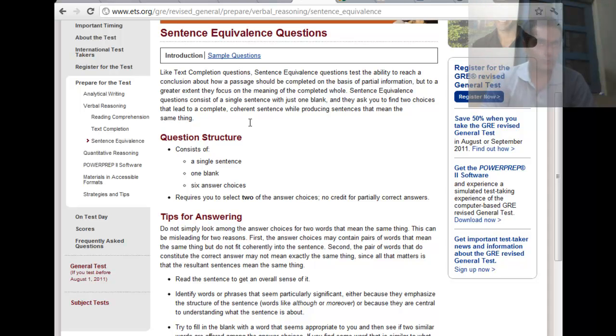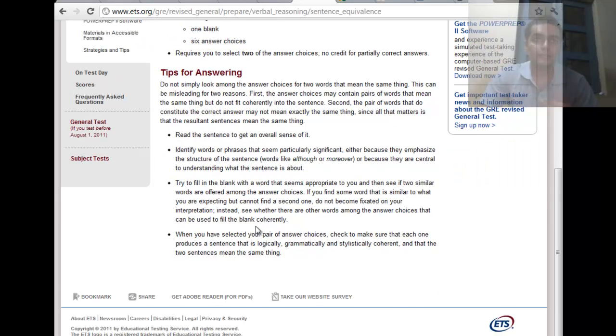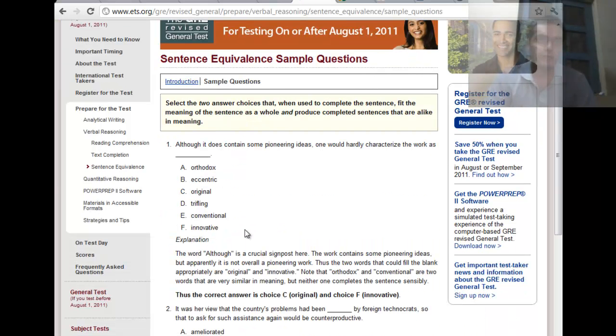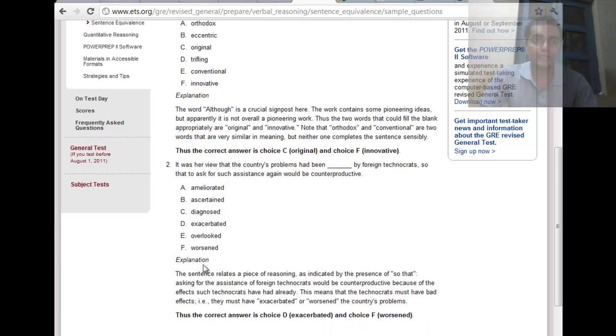These are like the easy pickings of the new GRE because you are going to still get these kind of questions by your knowledge of vocab. Two of them are right so they would have the synonym. So it is like a modified version of a synonym case. For example let us look at question one. Although it contains some pioneer ideas, although it is a trigger, one would hardly characterize the work as innovative or original. So that is what we are looking at. We will have the same hints but we will have synonyms here. And the questions are being structured and the topics are just like the old GRE.